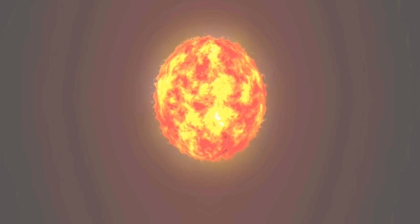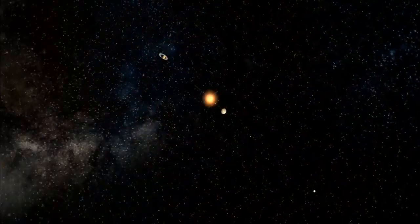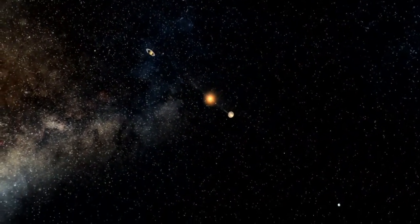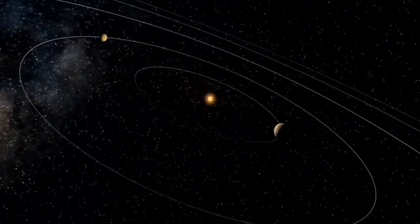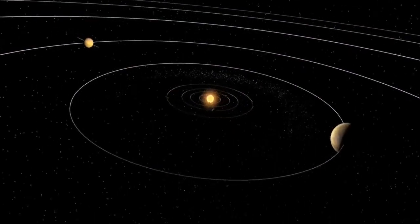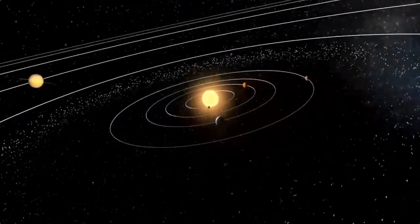The star UY Scuti is considered the biggest known. It is only 30 times the Sun's mass, but has a radius more than 1,700 times greater than the Sun. We can fit approximately 4 billion Suns in UY Scuti.